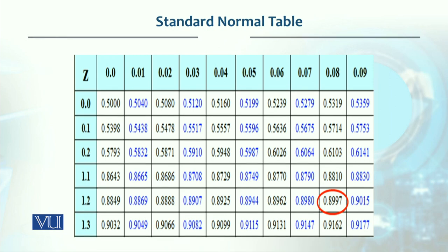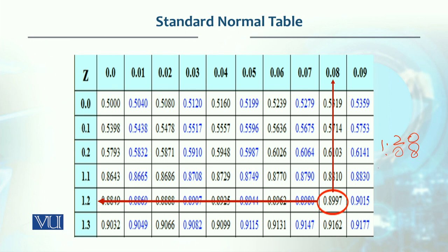We can look at a reverse example: if we have an area under the curve of 0.8997, what will be the Z value? First, we go to the leftmost column, which gives 1.2. Then we go upward along the column header, which gives 0.08. If we sum these, it becomes 1.28. So the Z value is 1.28.